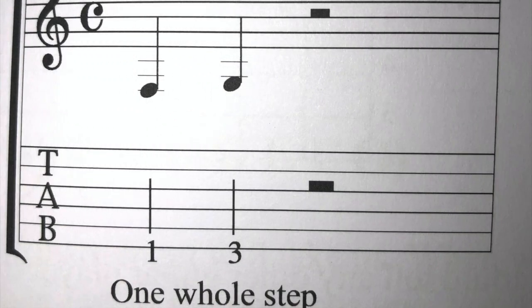The whole step is equal to two half steps. The whole step is also known as the major second. The distance between the first two notes of a major scale is a whole step, like we see here with the first note F and the second note G. So this indicates a whole step. I'm now going to demonstrate a whole step — we're looking at the notes F and G for this one.